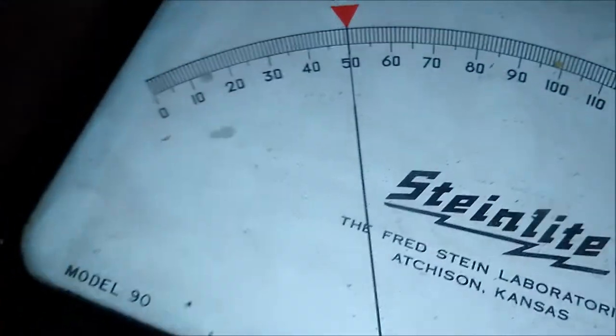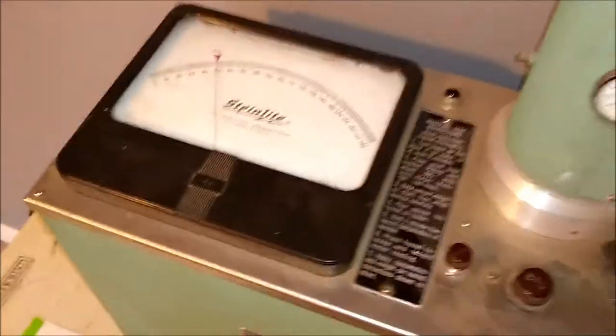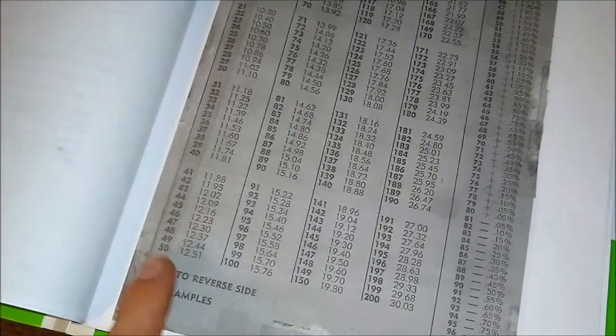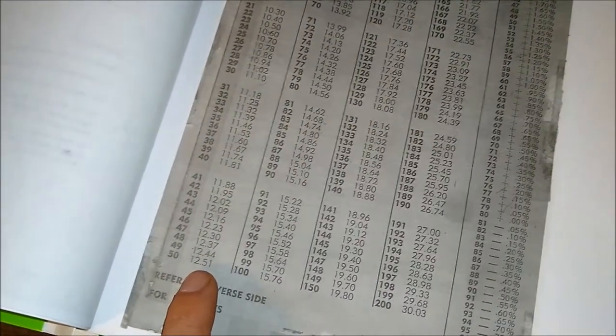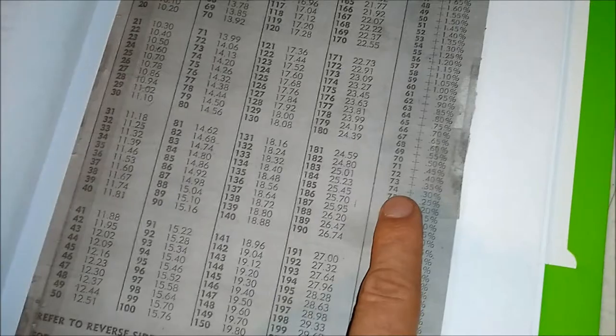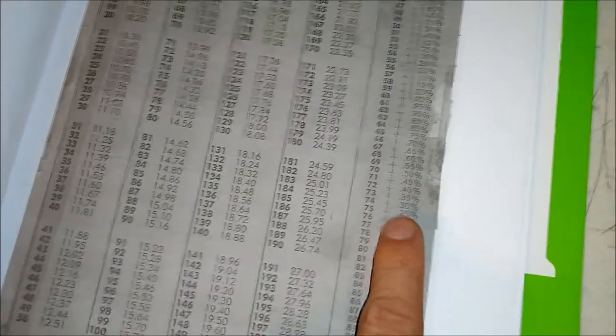You can see that the reading that we are getting is about 50. Looking here at the chart, you can see that we had a reading of 50. That means that the moisture is 12.51 percent. Then figuring in the temperature at 74 degrees, you have to add 0.30 percent.